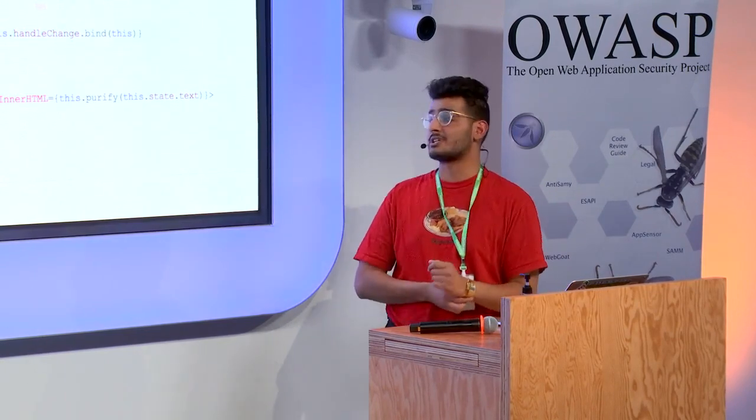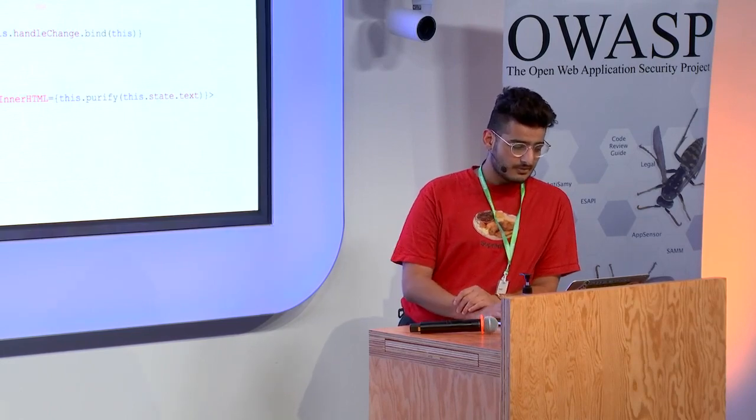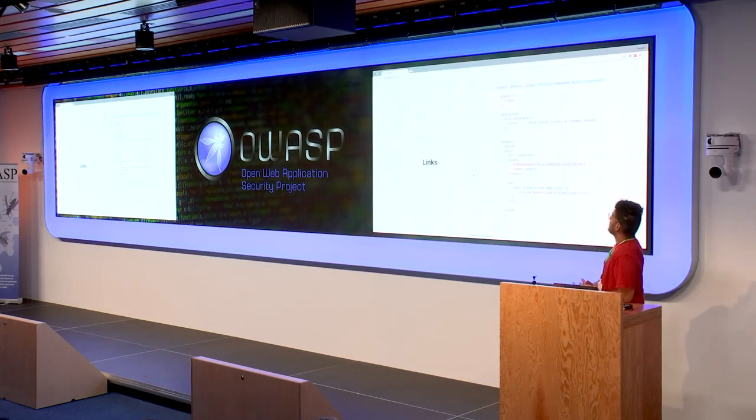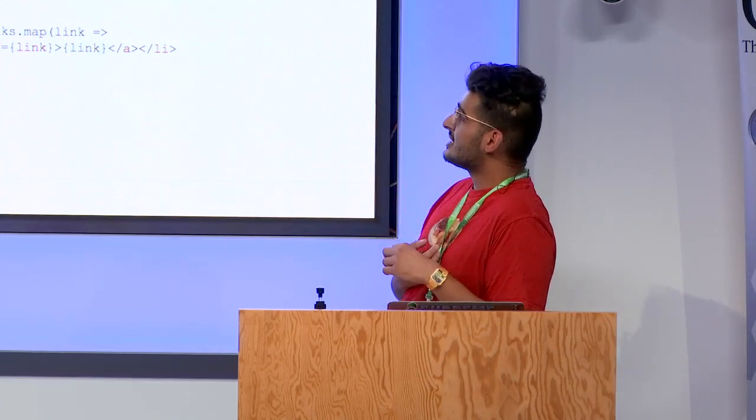This is a surprisingly common bug I see in a lot of code reviews. The second I see a React application, this is the first thing I grep for, and then I check whether any user-supplied input is being passed into it. As a developer, you might think, OK, I've got output encoding out of the box and I don't want to use dangerouslySetInnerHTML, but there are other things you have to watch out for in the framework as well.